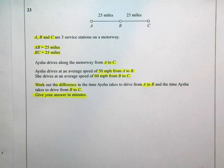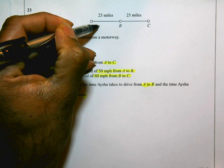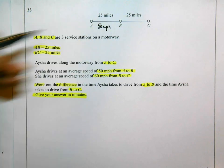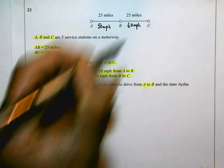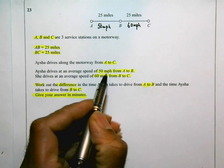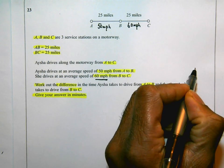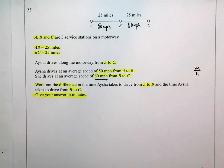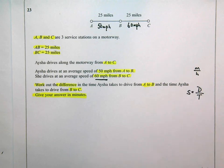Looking at the information given, I know it's 25 miles from A to B and she drives at 50 miles per hour from A to B, and 60 miles per hour from B to C. This question involves speed, so I need to use the speed-distance-time equation. If you've forgotten it, you can use the units of speed to help — speed is miles per hour, meaning miles over hours, so speed equals distance over time.